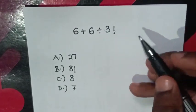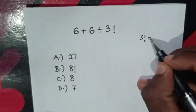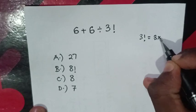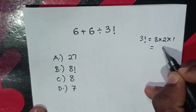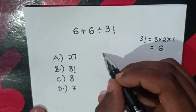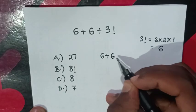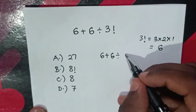Now, first from 3 factorial, this is same as 3 times 2 times 1. So this is equal to 6. So here, it will be 6 plus 6 divided by 3 factorial is 6.